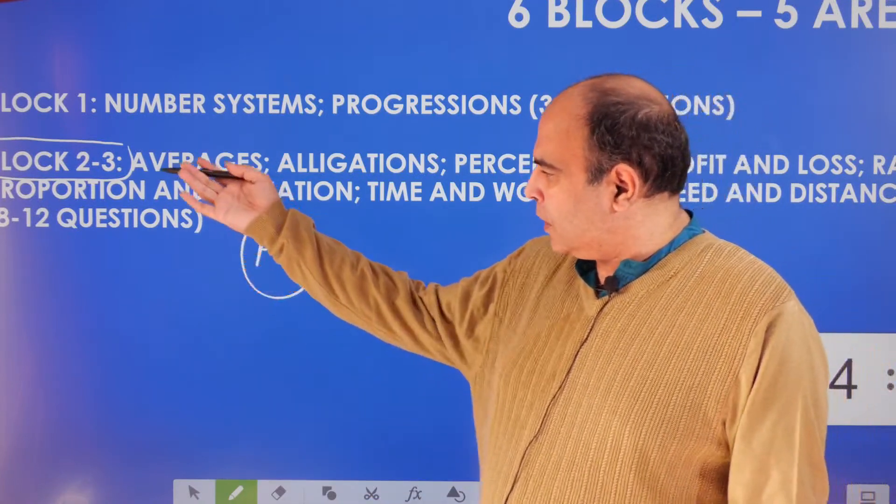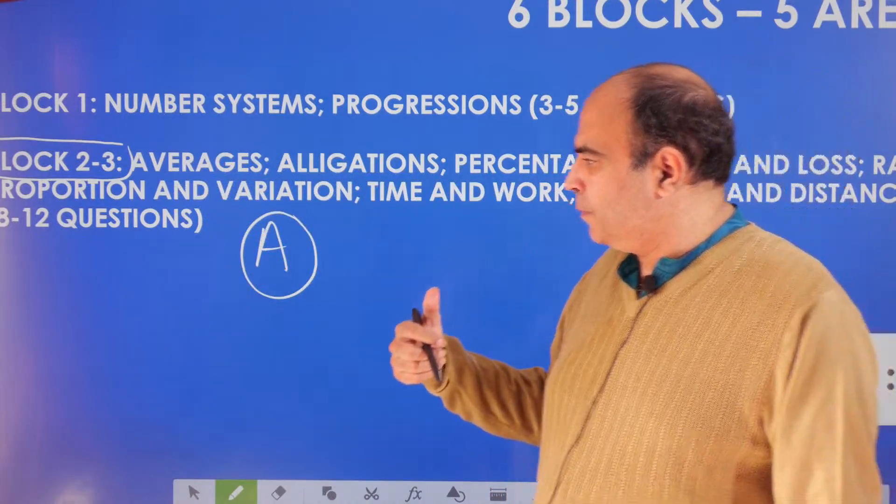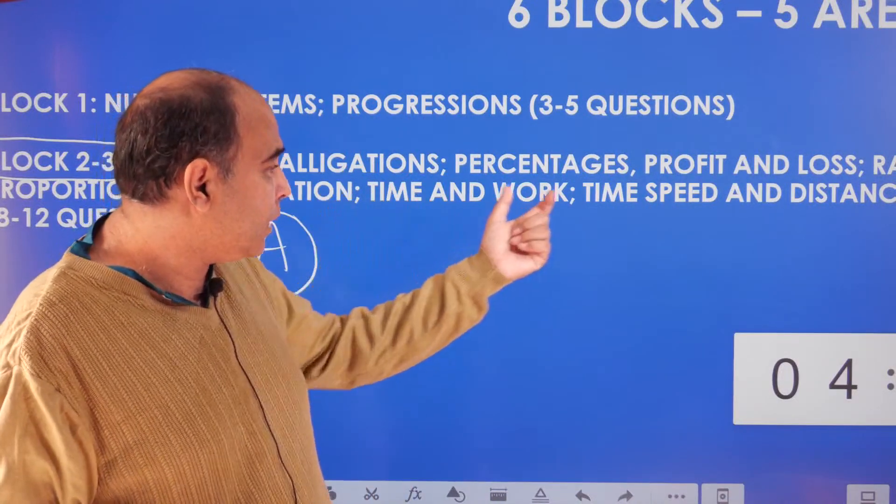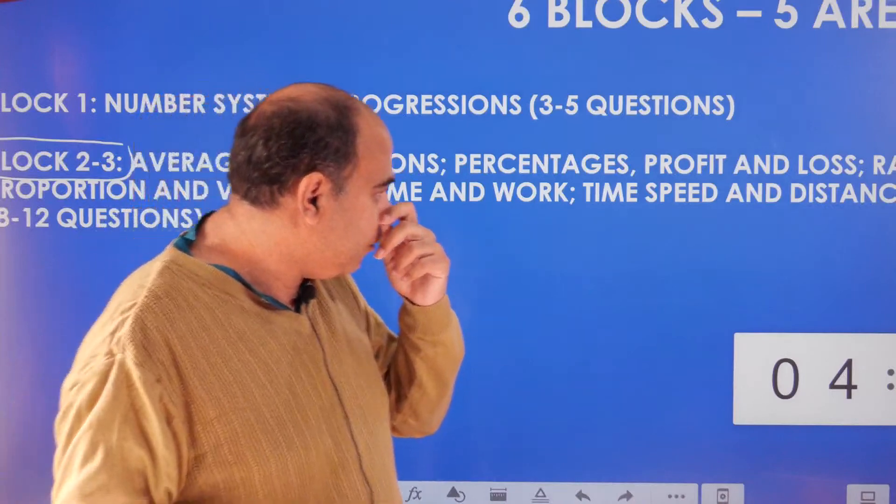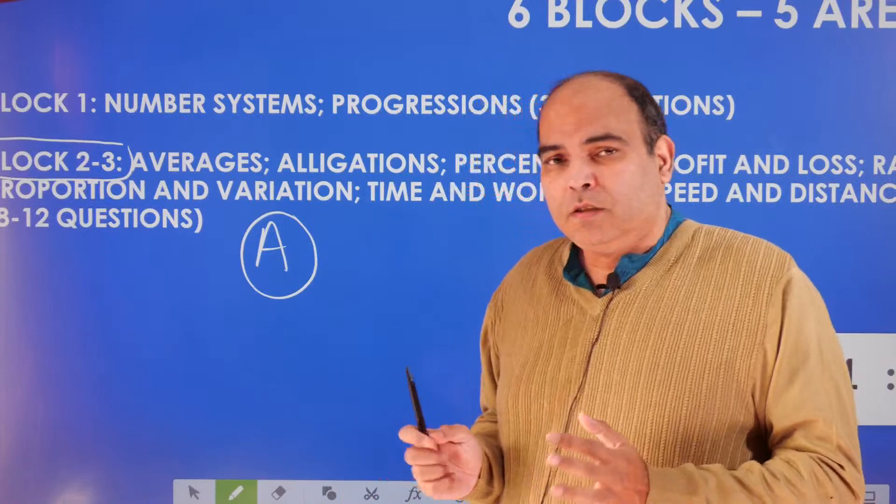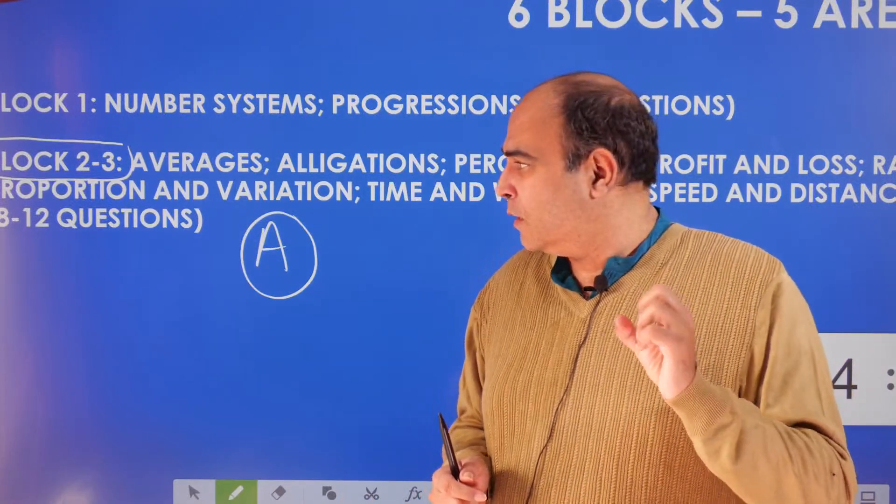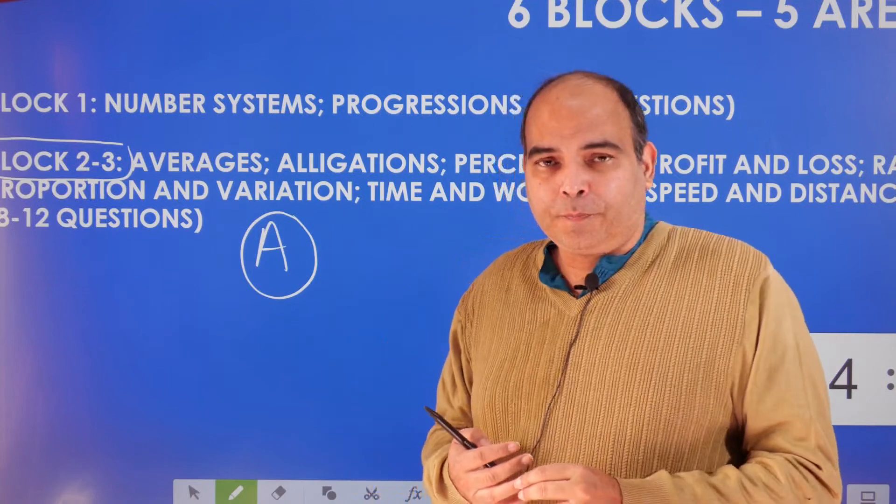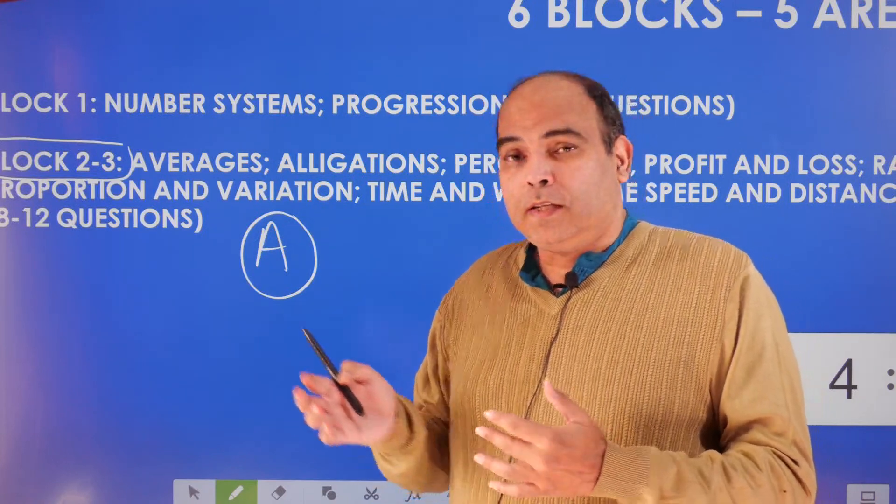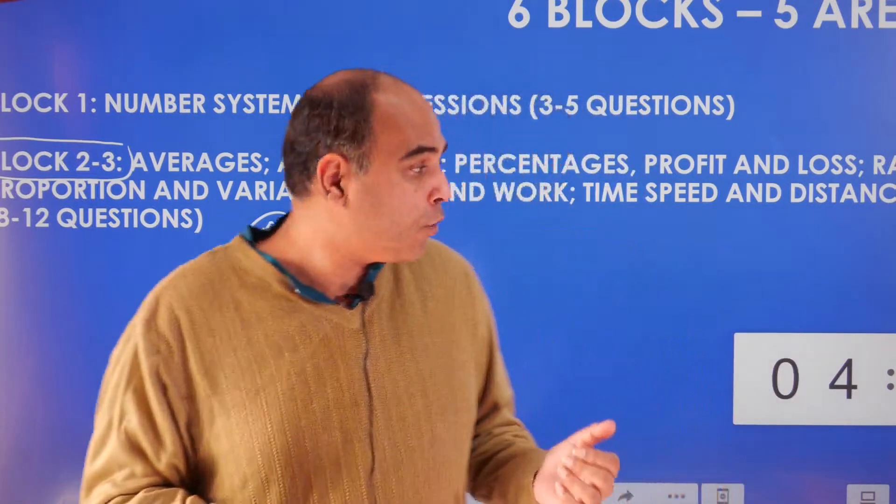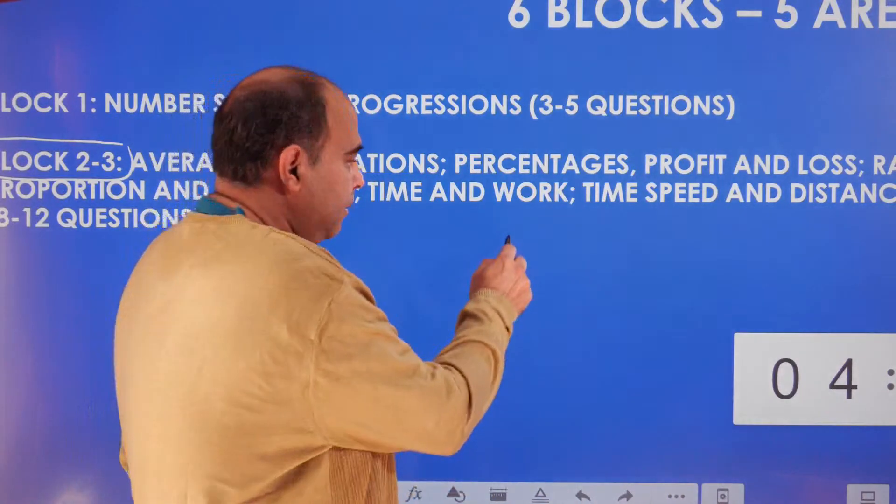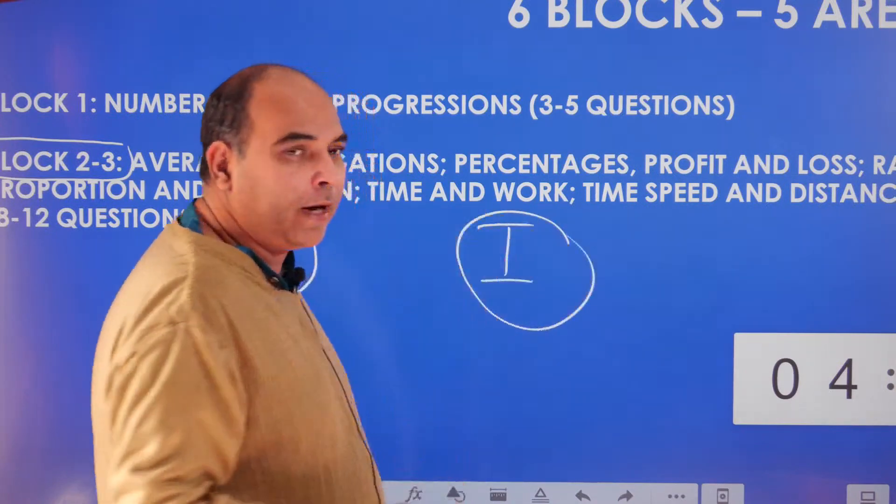This is the arithmetic area, and this is what you should start with. The chapters here are averages, alligations, percentages, profit and loss, ratio and proportion, time and work, time speed and distance, and interest—compound interest and simple interest. These eight chapters will give you around 8 to 12 questions inside the CAT, even in a 22-question paper. Given that number, this is perhaps the most important part of your syllabus, and hence should be priority number one.